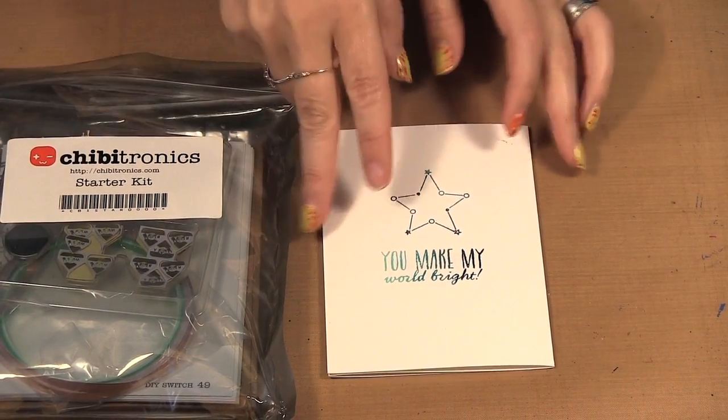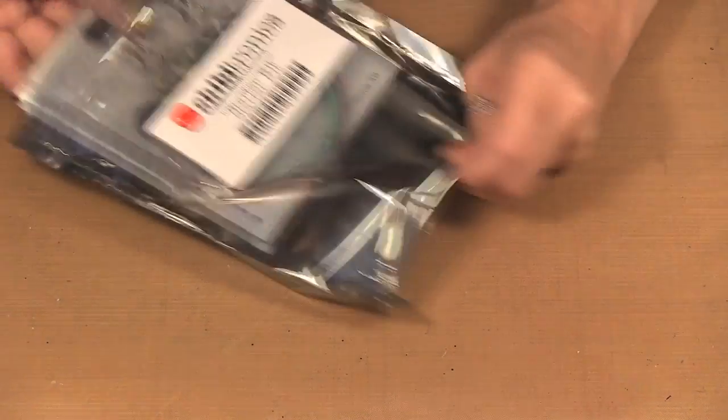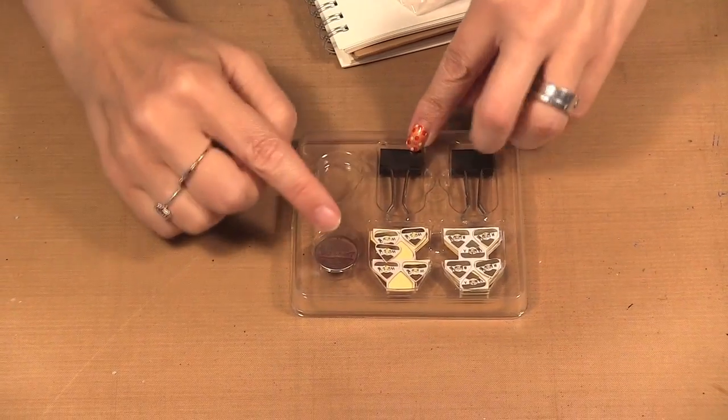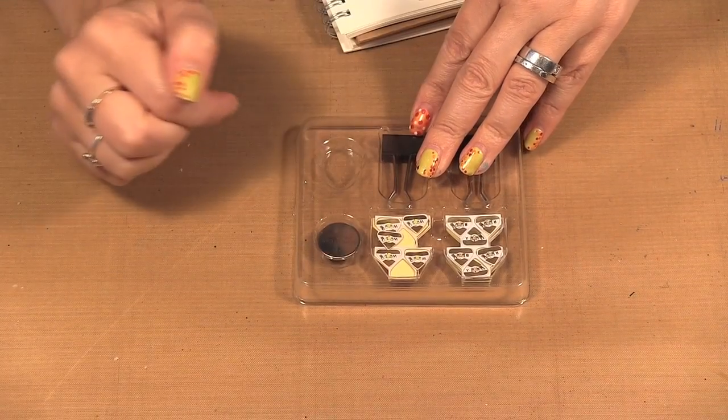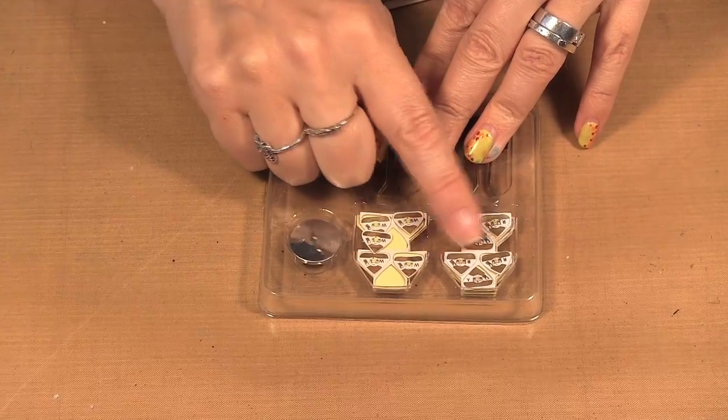So I'm going to show you first what's in the kit. Here you get a couple clips, you get two batteries, I've used one in that card, and then you get a bunch of white lights and then colored lights, red, blue, and yellow.